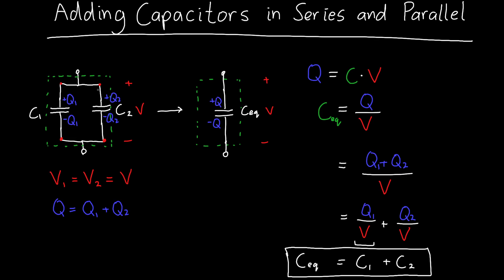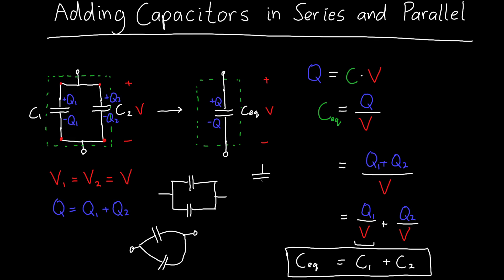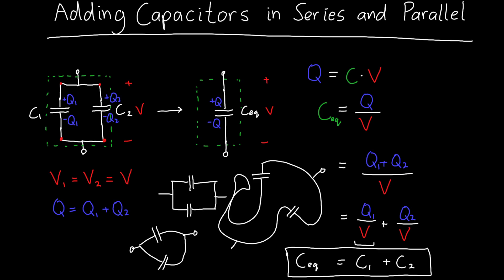I've drawn the parallel capacitors vertically, but you can draw them however you want — horizontally, at a weird angle, or in some absolutely unusual configuration — as long as they are connected at both ends. That's the only thing that matters for parallel capacitors: there must be a wire going from one end of each capacitor to the other end of each capacitor, so they are connected at two locations.